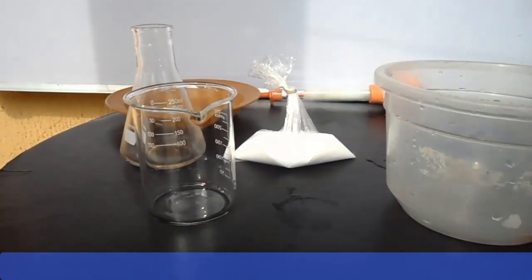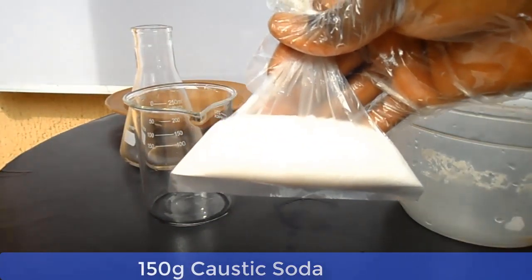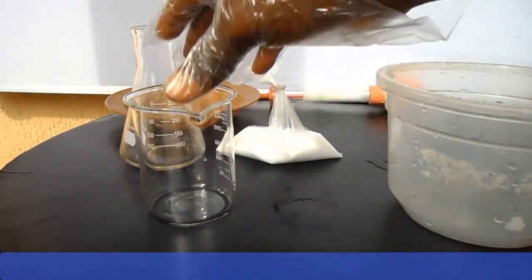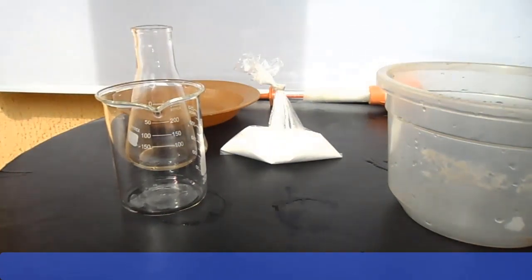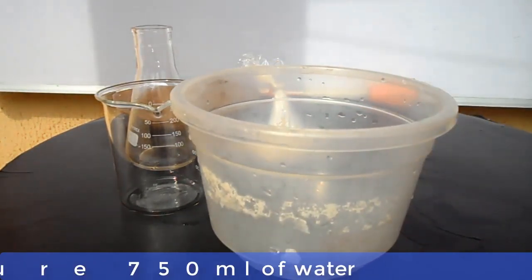We are preparing a lye solution for making toilet or medicated soap. Here we have 150g of caustic soda. We will start the water volume with 750ml of water. So let's measure 750ml of water and dissolve the 150g of caustic soda in the water.